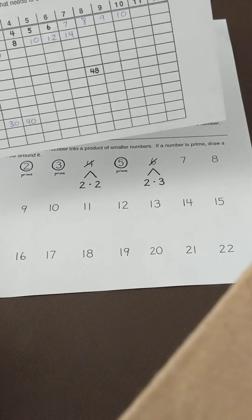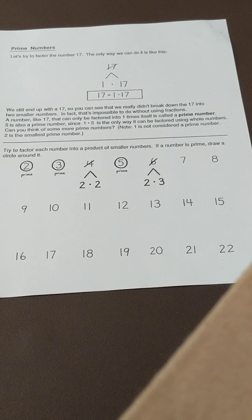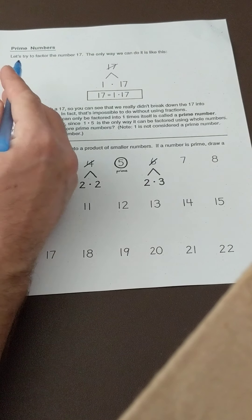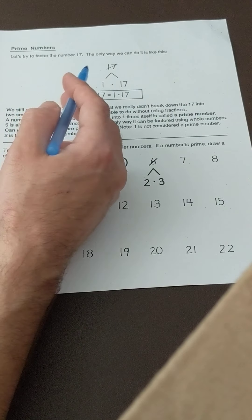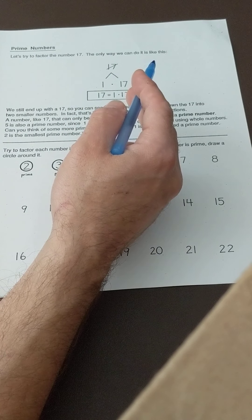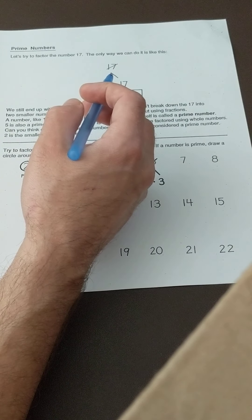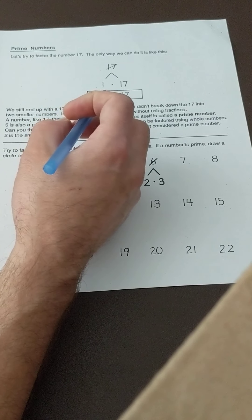Anyway, let's try to factor the number 17. The only way we can do this is like this: take 17, break it down with 1 times 17, and that's the only way you can do it.